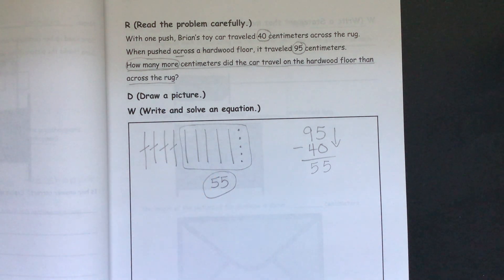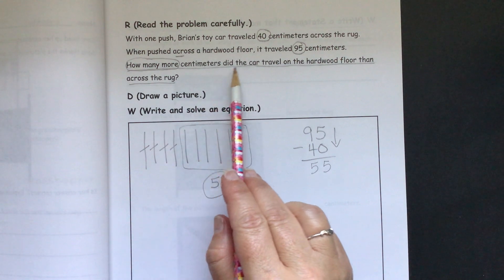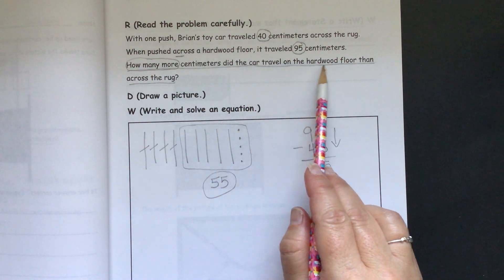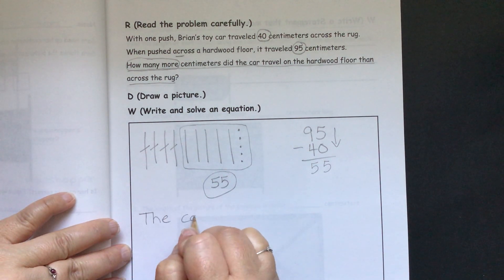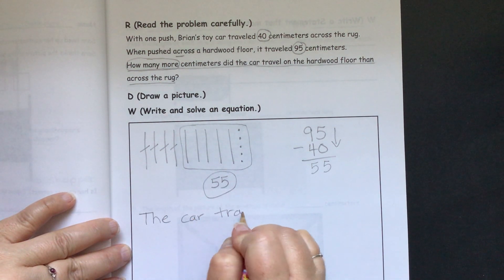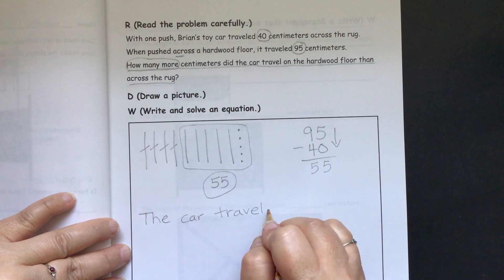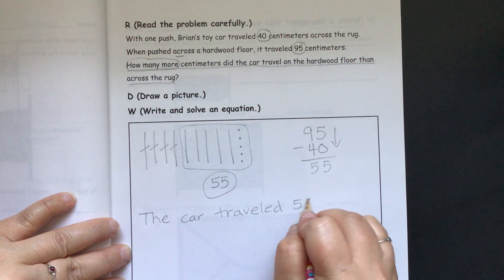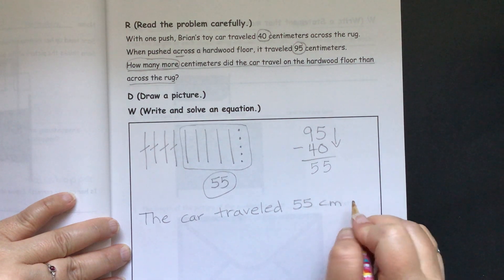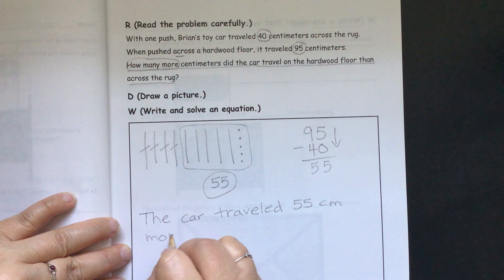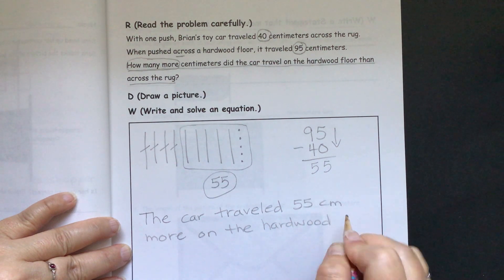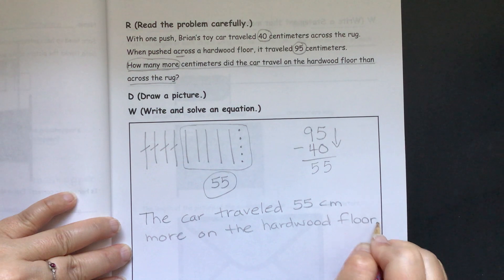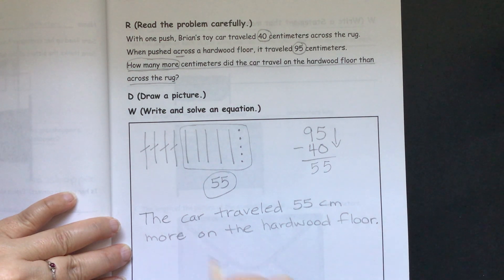Then we need to answer our question. So how many more centimeters did the car travel on the hardwood floor than across the rug? The car traveled 55 centimeters more on the hardwood floor.